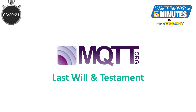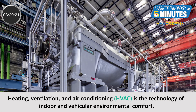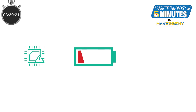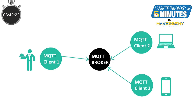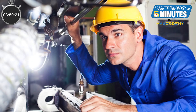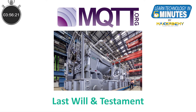Let us look at a real-world scenario where Last Will and Testament will be very useful. Let's say your company has installed a smart HVAC system in a factory, and it consists of an array of hundreds of airflow and pressure sensors distributed throughout the HVAC pipes. If a sensor node is damaged, has battery failure, or has network issues, due to the decoupling nature of the MQTT architecture, the subscriber clients can't know which board has ungracefully disconnected. It will be a pain to manually find the sensor node and replace it.